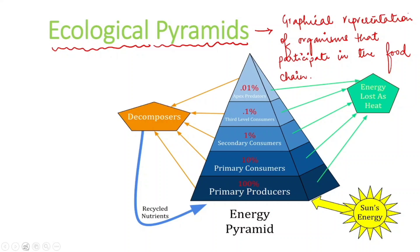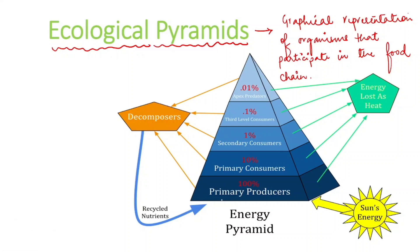When we draw the graphical representation — here I have attached the diagram — you see this is a graphical representation of the entire food chain. For example, grass eaten up by mice, eaten up by snake, eaten up by eagle. This graphical presentation of the food chain in this form we call ecological pyramids.